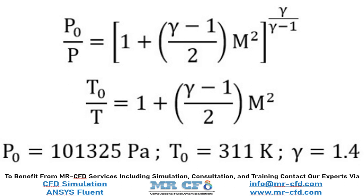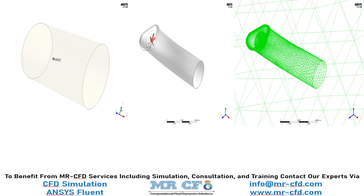The current model is designed in three dimensions using Design Modeler software. The model consists of two parts: the body of the turbojet with a fan inside it, which is located inside a cylindrical computational domain for airflow. The area around the fan is defined as an independent computational area so that the rotation of the fluid due to the fan can be modeled using the frame motion method. The entire cylindrical space around the turbojet body is defined as a pressure far-field boundary condition.